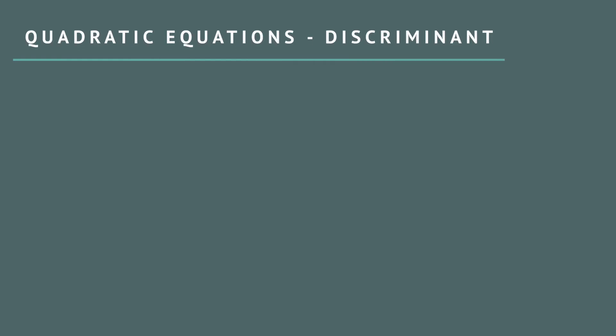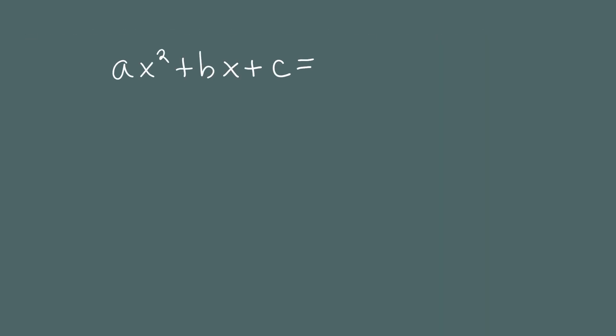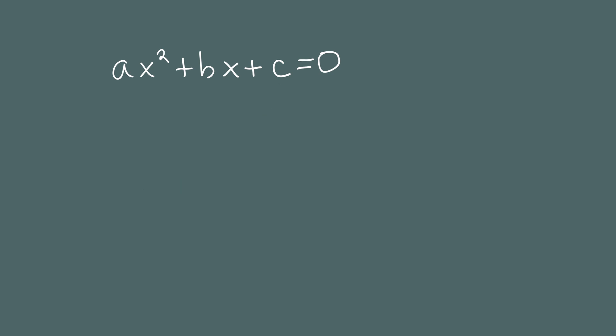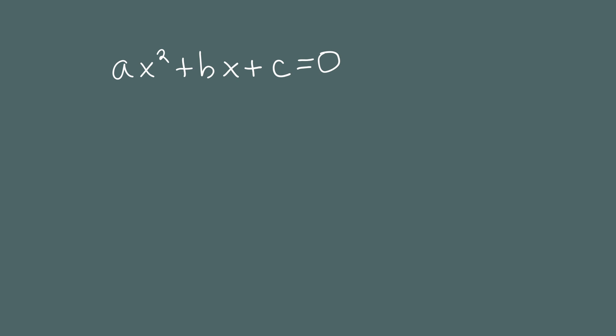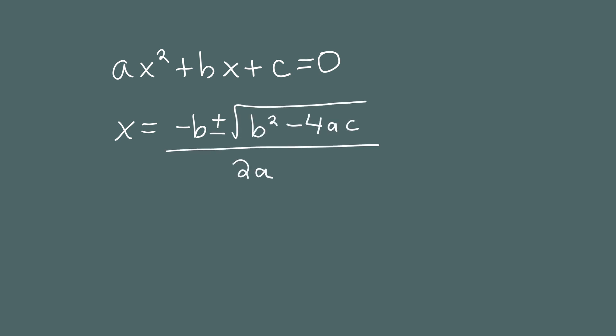Today we're going to talk about the discriminant, and let's begin by looking at the quadratic formula. Suppose we have a generic quadratic equation, ax squared plus bx plus c equals zero. In this equation, a, b, and c represent the known numbers, while x represents the unknown — it's the variable. We solve this equation by using the quadratic formula, which says that x equals negative b, plus or minus the square root of b squared minus 4ac, all over 2a.